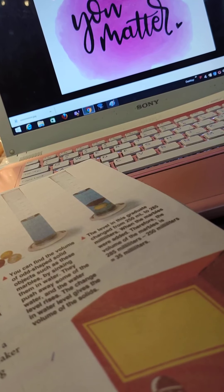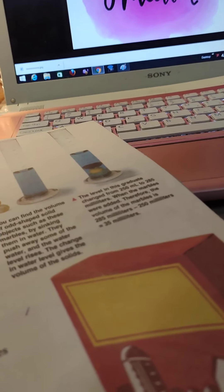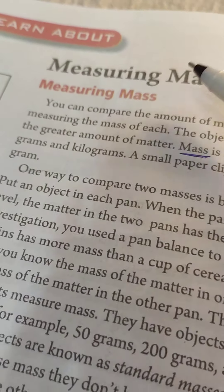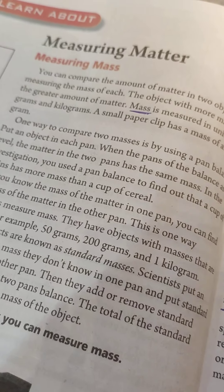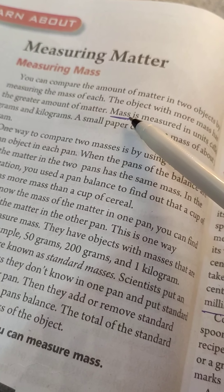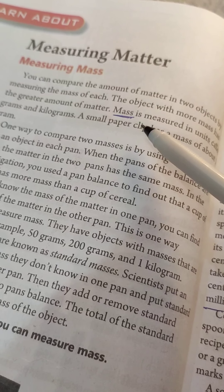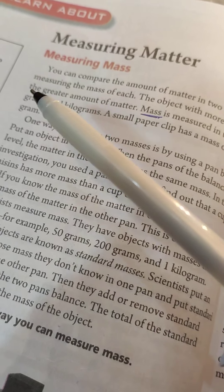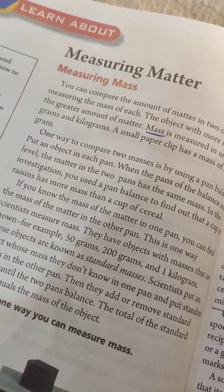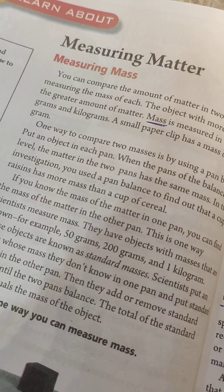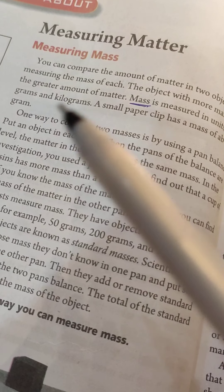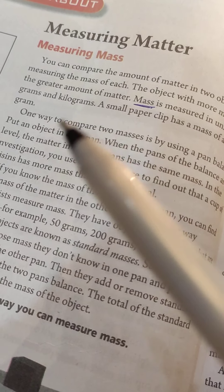Our lesson today talks about how to measure matter. Measuring matter can be done either by mass or by volume. First, we talk about mass. Mass means the amount of matter. The unit of mass is the kilogram or gram.